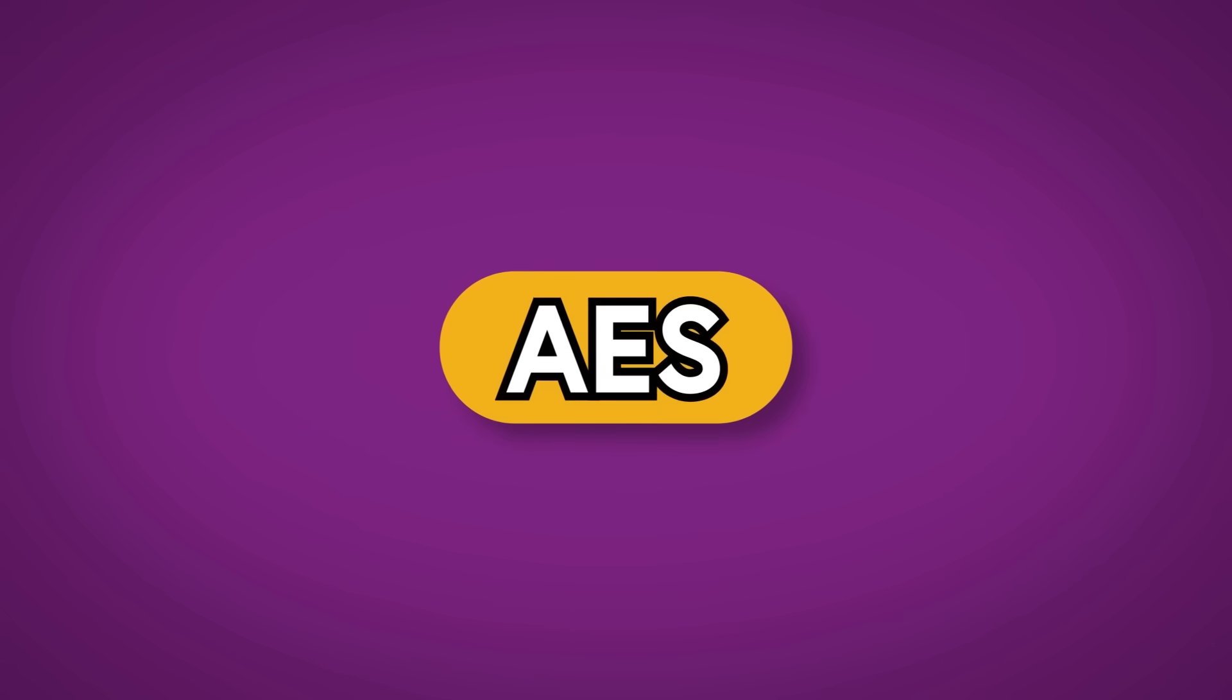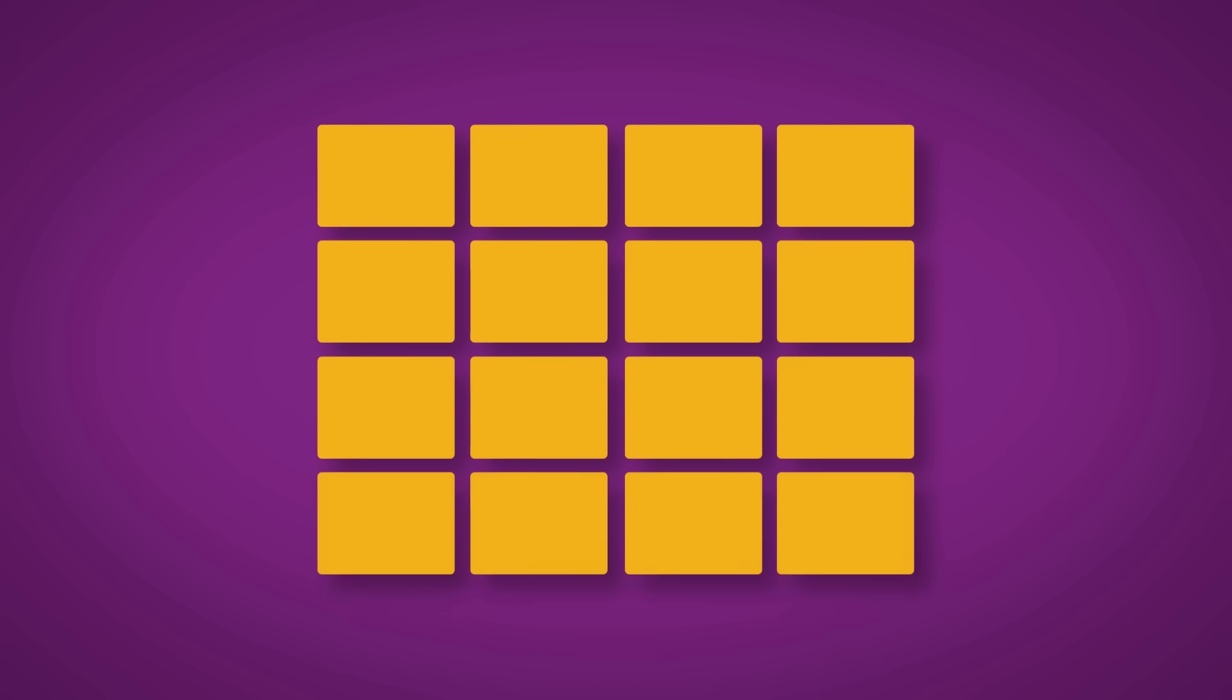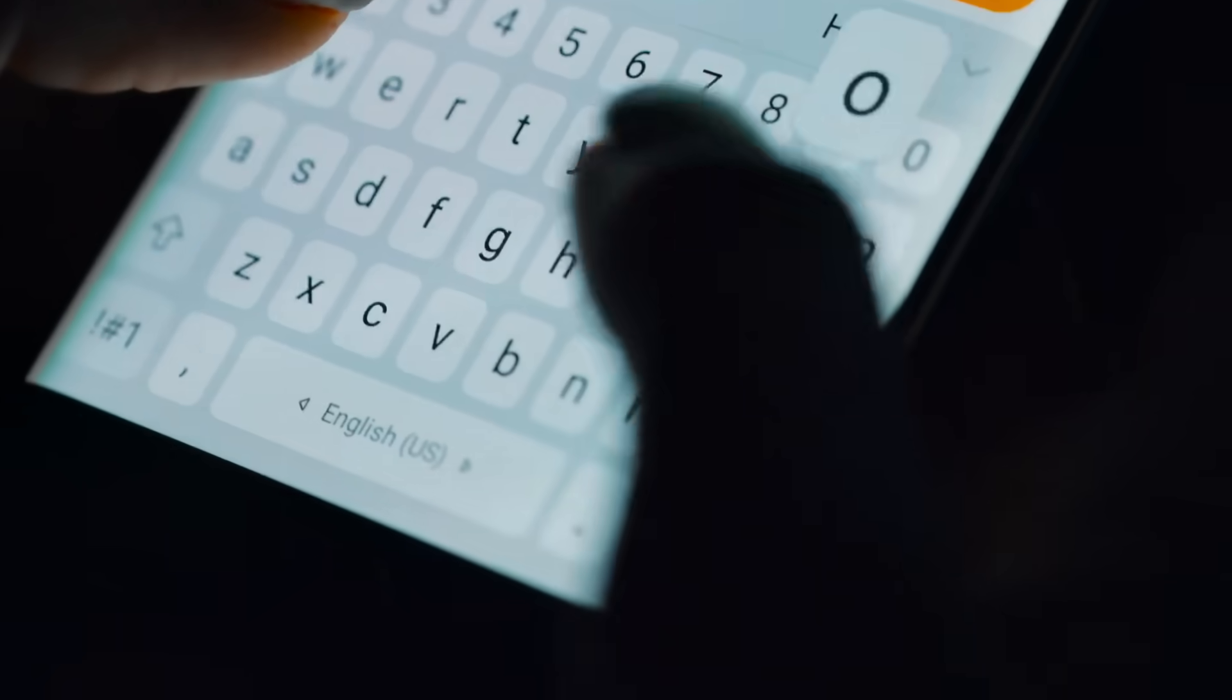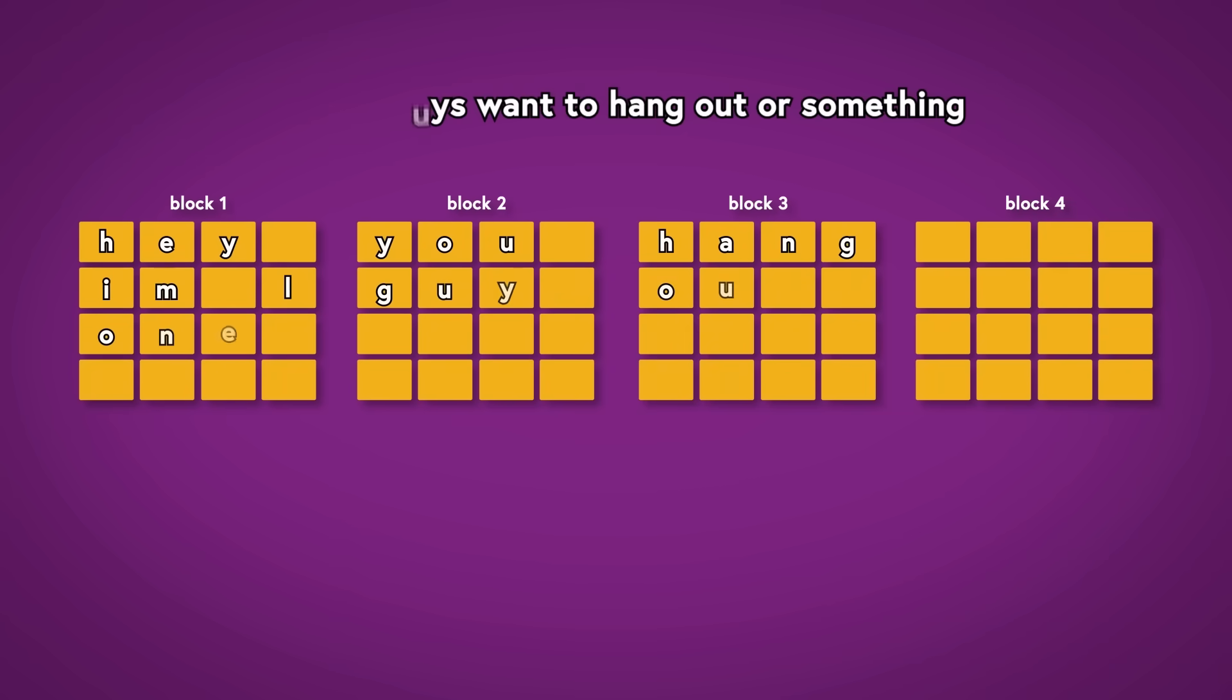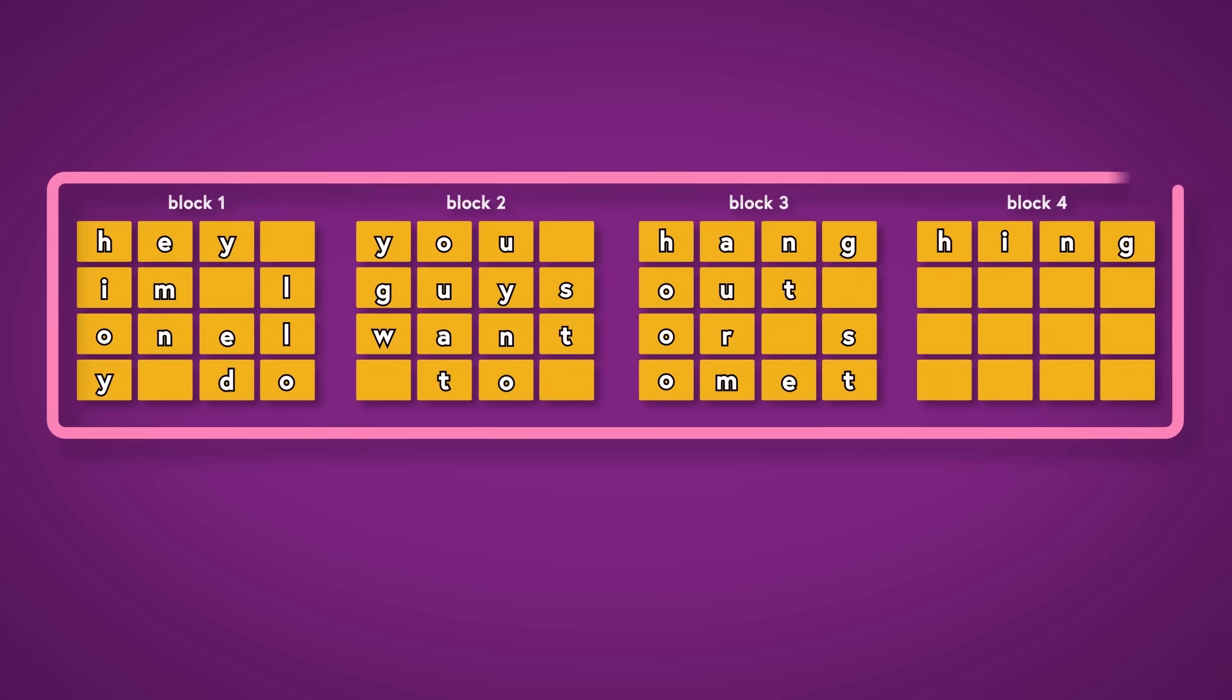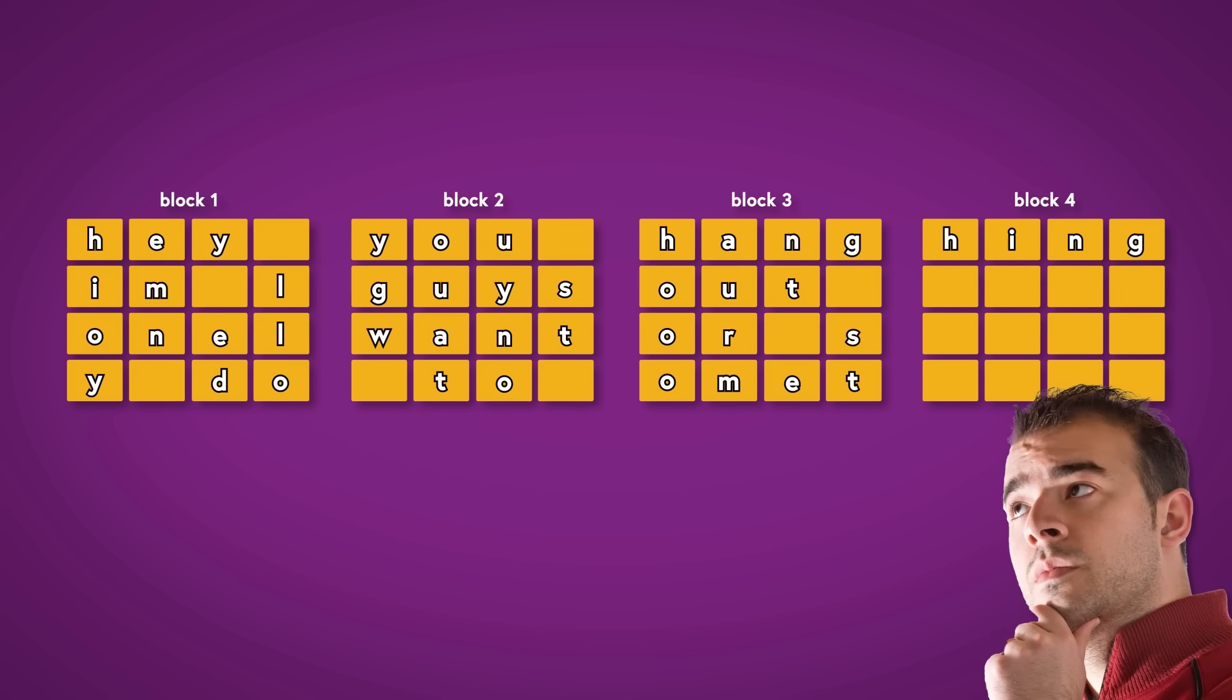AES is what's called a block cipher, which means that the first thing that it does is take your message and break it up into blocks that are basically four letters by four letters. If I'm sending the FBI a very sensitive tip on Facebook Messenger, for example, that message is going to be encrypted 16 characters at a time. I know that putting them in a box like this makes them kind of hard to read, but believe it or not, we're not even done encrypting them.